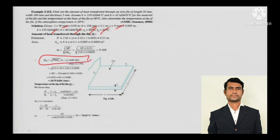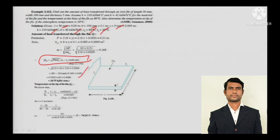If the fin length is not given, deploy the formula for an infinitely long fin. But when a definitive length is given in the numerical, apply the insulated-tip formula, because it contains the length L. So here: q_fin = √(hPkA) × θ₀ × tanh(mL). For the tip temperature profile, you again have all the values — just calculate.